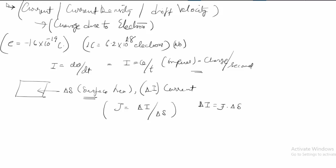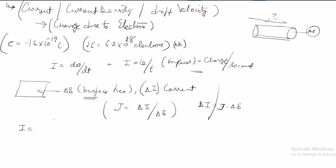To find the total current flowing through the full surface area of a conductor: you initially took only a delta s area, but now you want the current through the entire conductor. You can find this by integrating, and you get current i is equal to the surface integral of J dot ds.